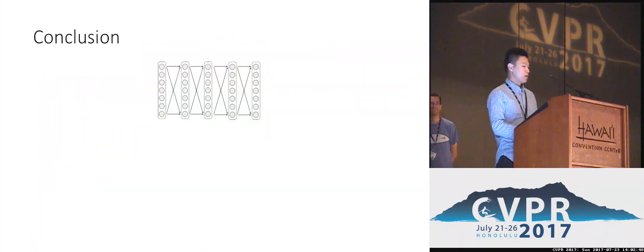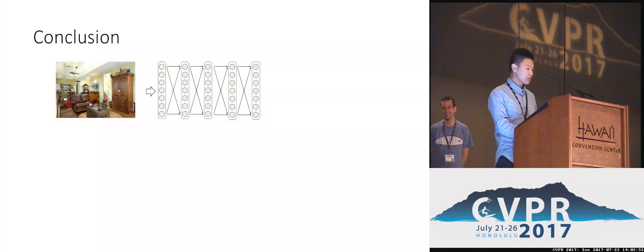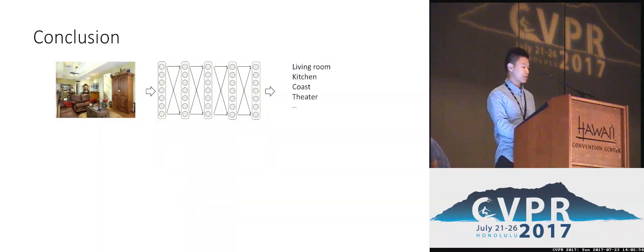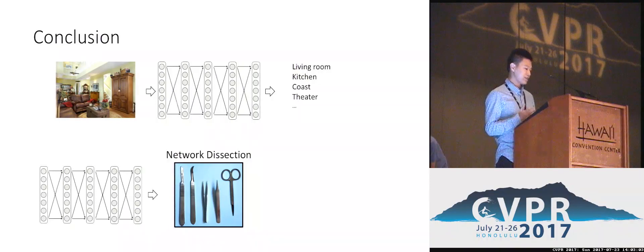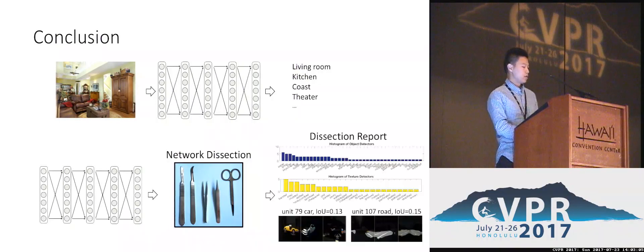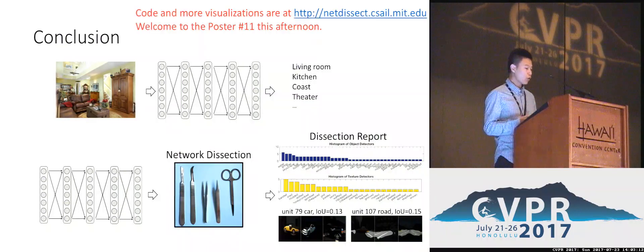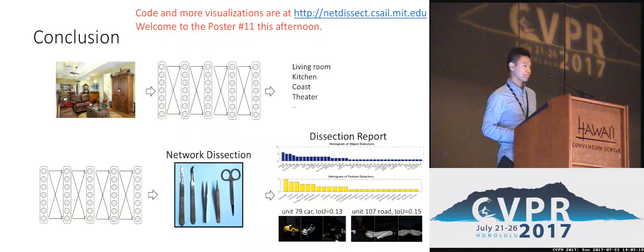In conclusion, previously ConvNets were considered black boxes — you feed images in and get predictions out. With network dissection, we have a toolkit to reveal the interpretability of any given network. You can feed a ConvNet into network dissection, and it will generate dissection reports helping you identify interpretable units. We release all the code and more visualizations on our project page. Please come to our poster session this afternoon. Thank you.